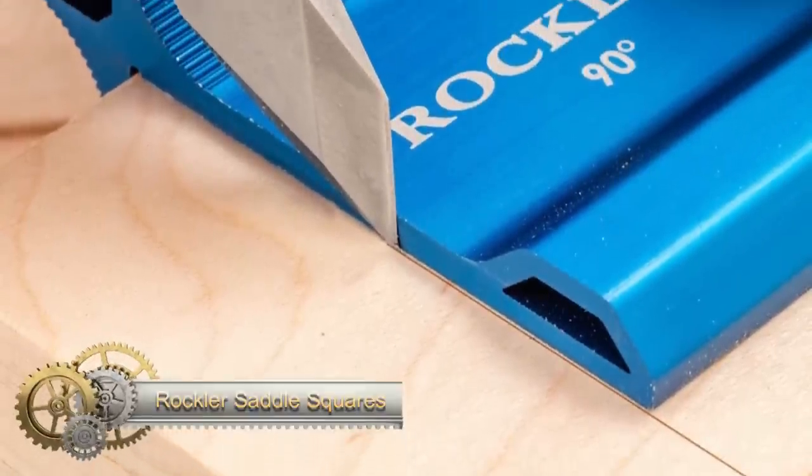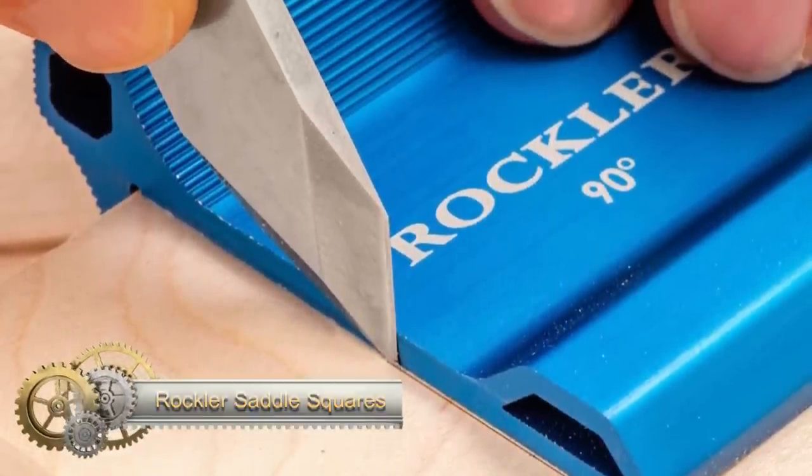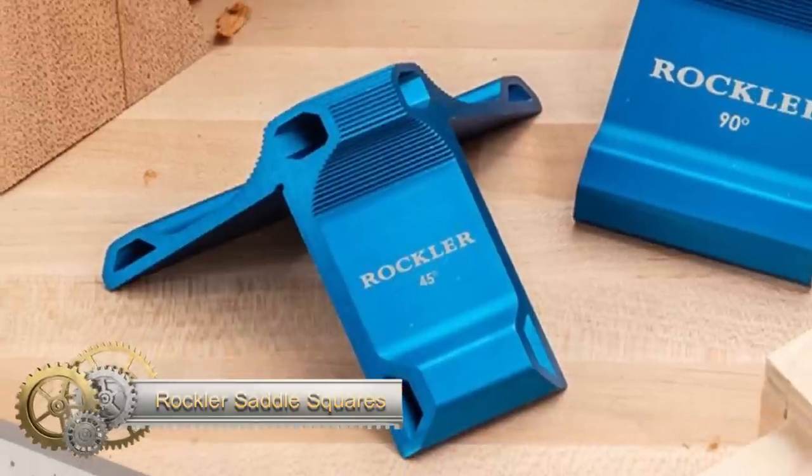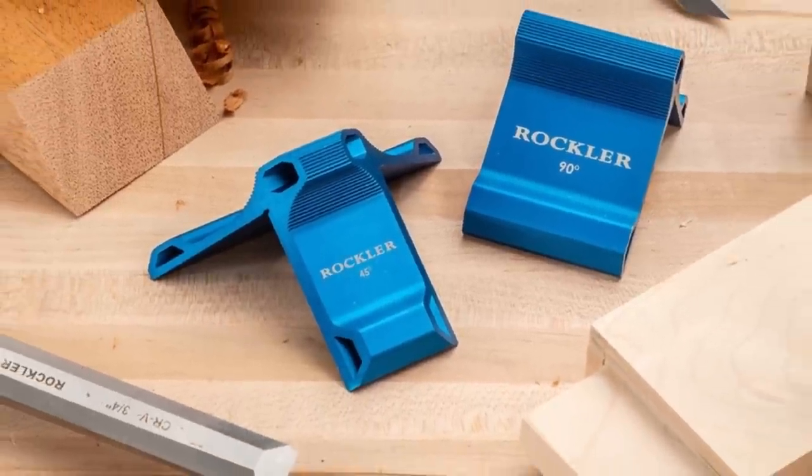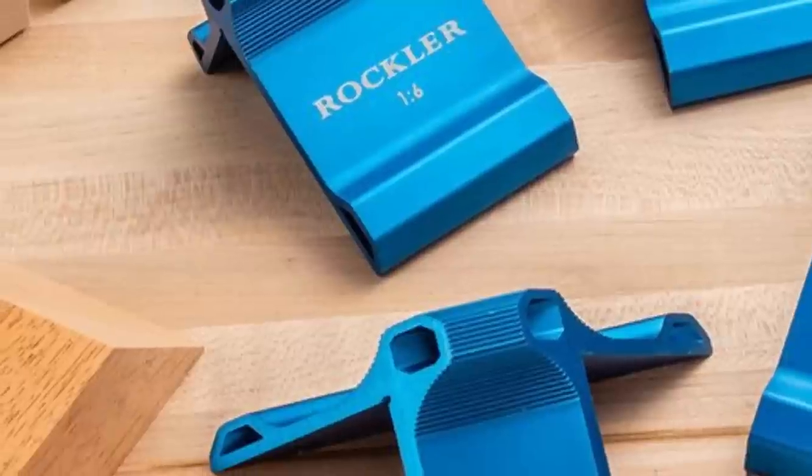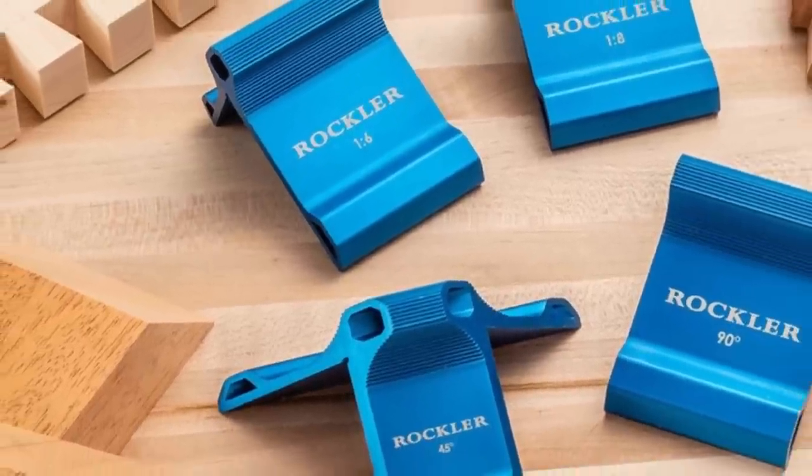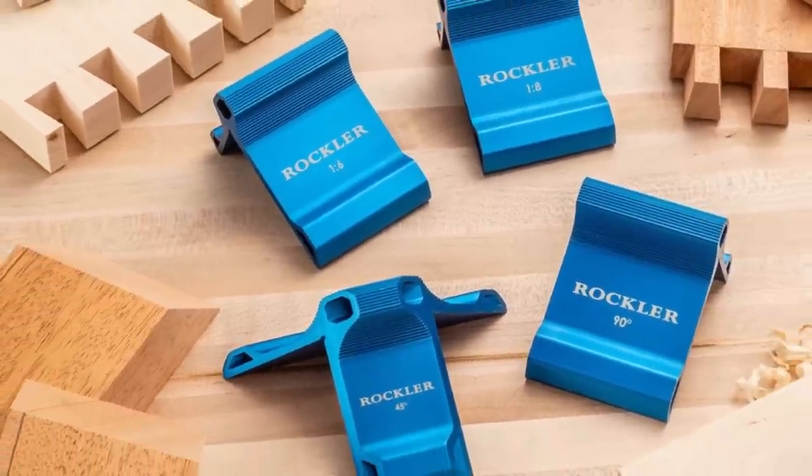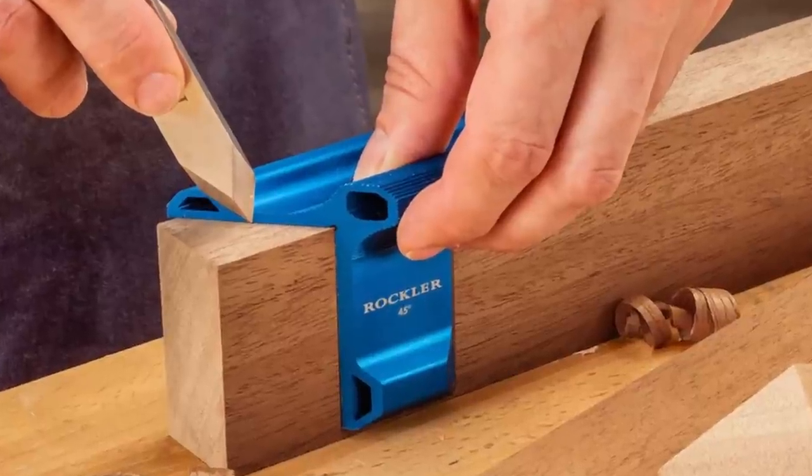The Rockler Saddle Squares are indispensable for exact layout and joint cutting. Available in 90 degree and 45 degree versions, they straddle corners for accurate marking on both sides. Made from sturdy, anodized aluminum, these lightweight squares promise precision and long-lasting durability.